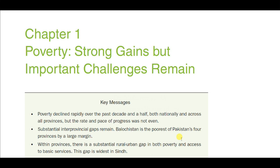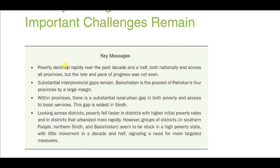Let's start chapter number one on poverty. The key messages are: poverty in Pakistan has declined rapidly over the past decade — meaning from 2004-05 to 2014-15, even though this report was launched in 2018 and took about three years to complete. The latest data available was 2014-15. When they say 'last decade,' they mean 2004-05 to 2014-15. In some indicators, different years are used, but generally speaking this is what they mean.